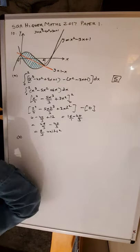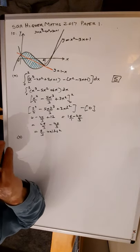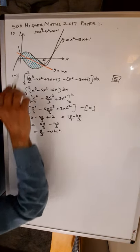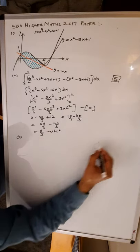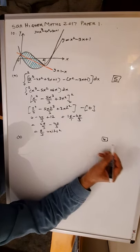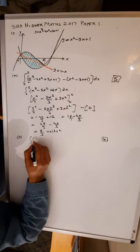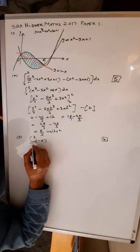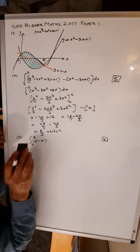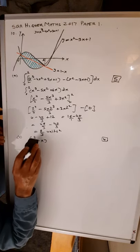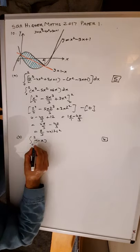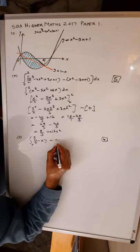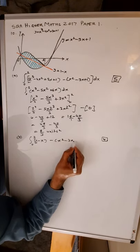Moving on to part B, for 4 marks you are asked to determine the fraction of the shaded area which lies below the line y equals 1 minus x. This is for 4 marks, so about 5 to 6 minutes. The integral is again from 0 to 2. The line is above, so it goes first: 1 minus x, minus the quadratic x squared minus 3x plus 1, with respect to x.